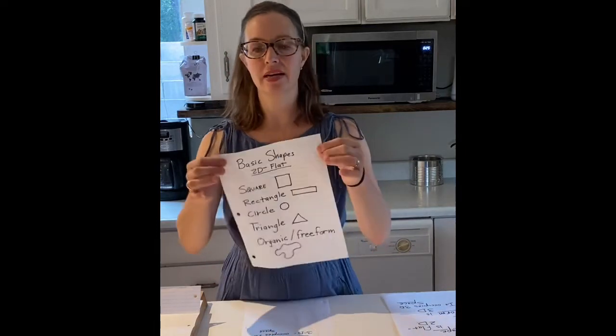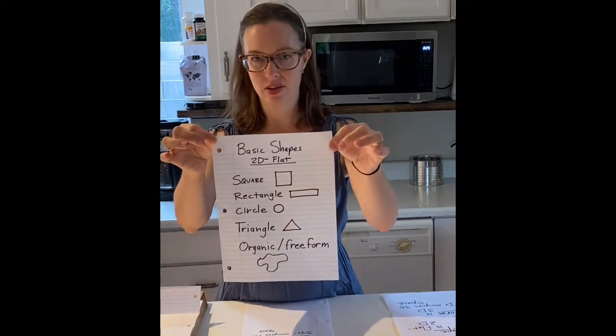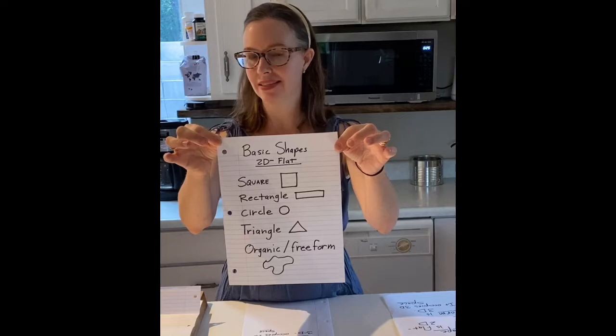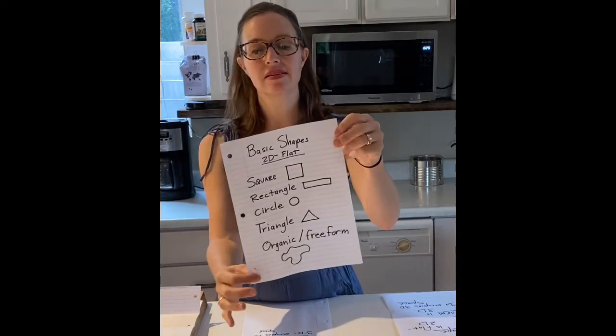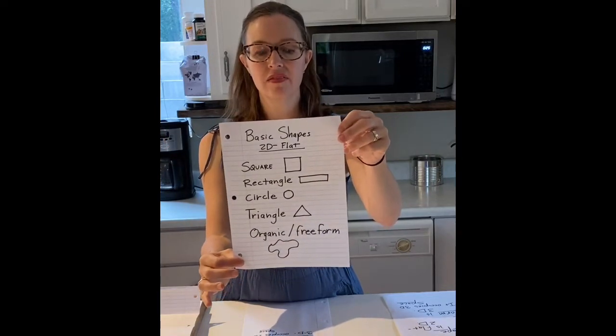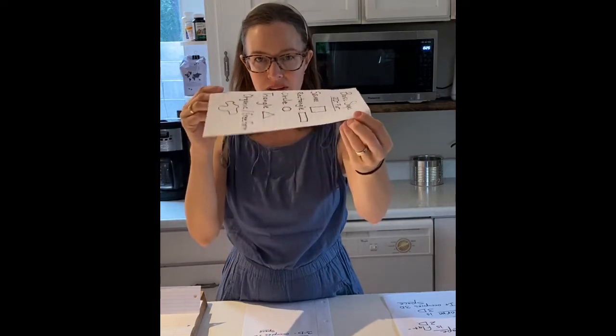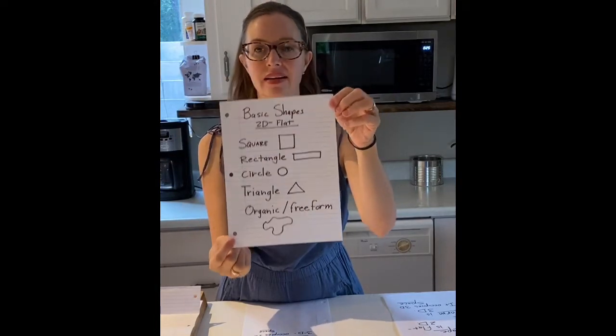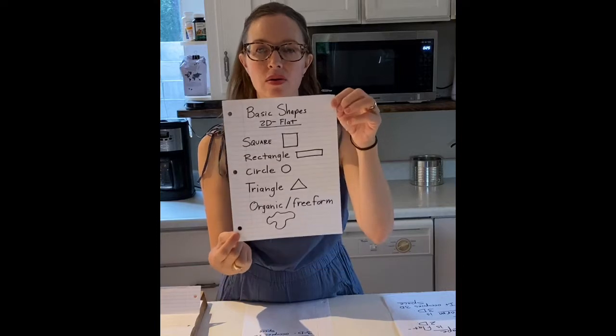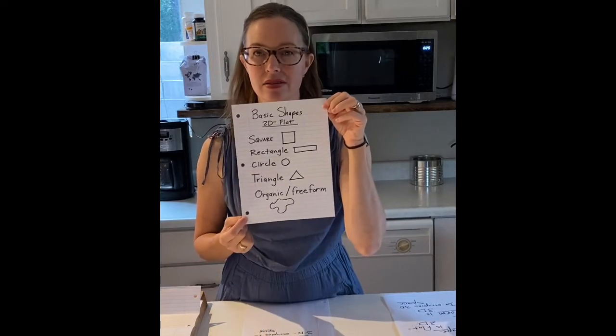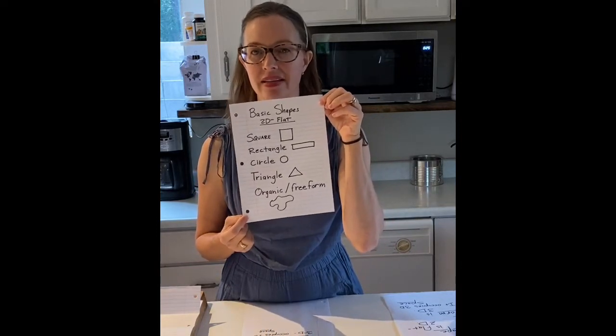A shape is flat. That means it might be something like a square drawn on a piece of paper that is flat, a rectangle, a circle, a triangle, or even an organic free-form image. These are all shapes. They're all flat. It's flat like a cookie.